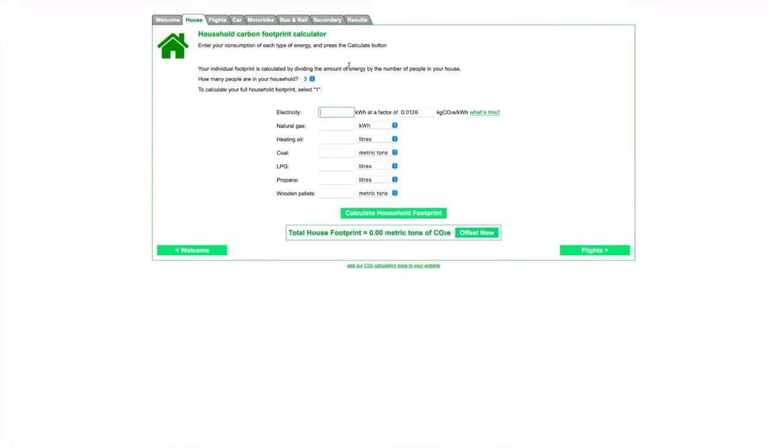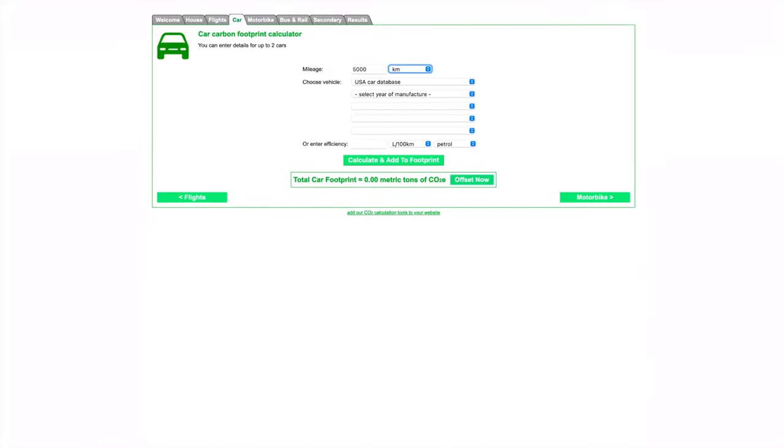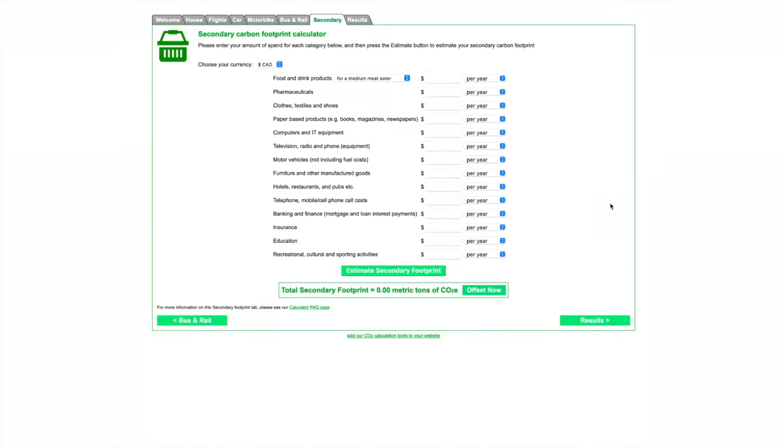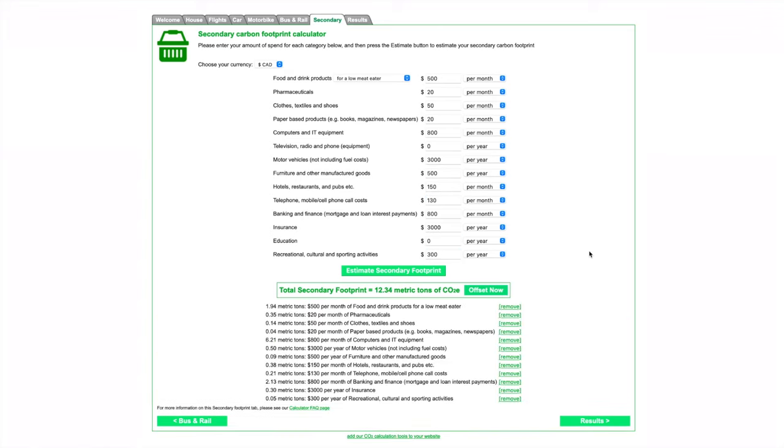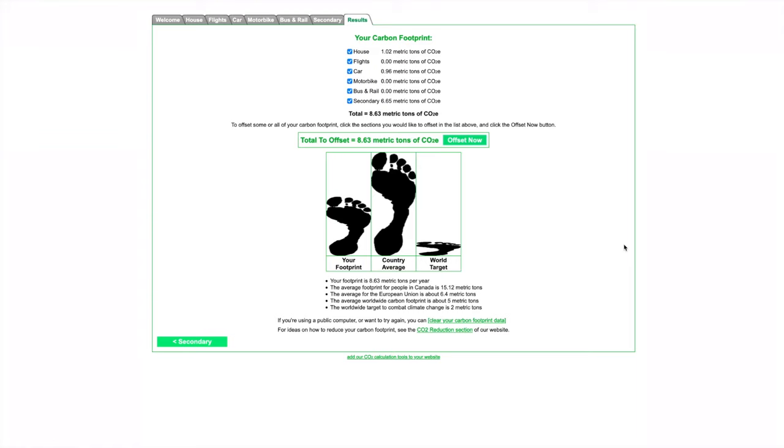Essentially, you enter how much energy it takes to heat your home, how much driving and flying you do, how much money you spend on food, clothes, technology, investments, etc. And the engine behind it translates everything into how many metric tons of carbon equivalent that is. Adding it all up at the end, you get your carbon footprint.